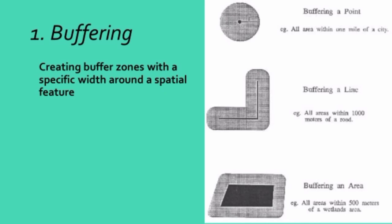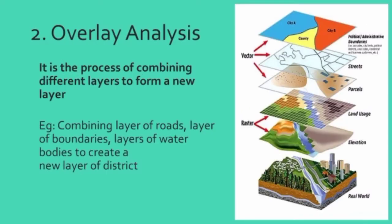Buffering is a data analysis method that creates buffer zones with a specific width around a spatial feature. Buffering a point creates a buffer area around that point; buffering a line creates a buffer area along all the lines; and buffering an area creates a buffer around that area. Overlay analysis is the process of combining different layers to form a new layer — for example, combining layers of roads, boundaries and water bodies to create a new district layer. Or, to study an accident pattern, you can combine layers of roads, accident points and travel itineraries such as residential and commercial areas to get an analysis output and calculate the reason behind it.